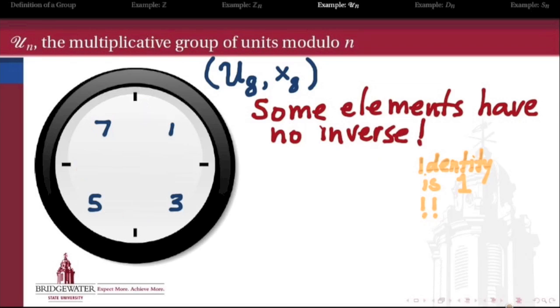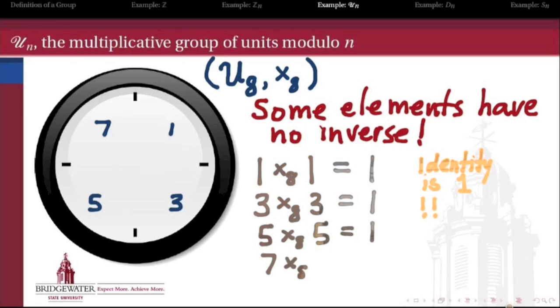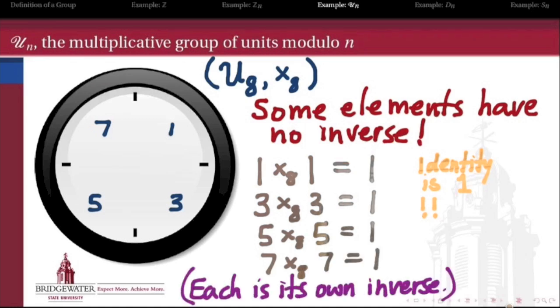Likewise, 4, 6, and 0 don't have multiplicative inverses. But 1, 3, 5, and 7 all do. In fact, these four are each their own multiplicative inverse. For instance, 3 is its own inverse because 3 times 3 is 9, and modulo 8 that's 1, which is the multiplicative identity. So with elements 1, 3, 5, and 7, I have a group under multiplication modulo 8.